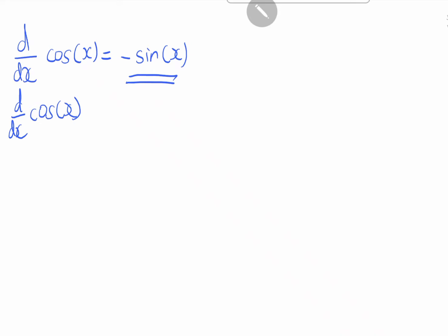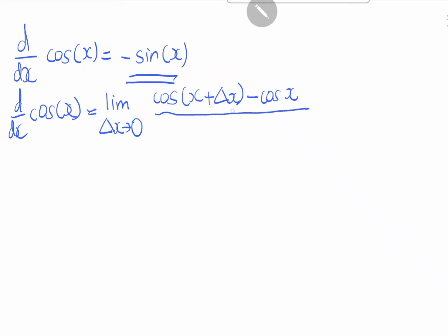by using the limit definition of derivative, can be written as the limit as delta x goes to 0 of cosine(x + delta x) minus cosine x, all over delta x. For this, we can use the trigonometric addition formula to expand this.